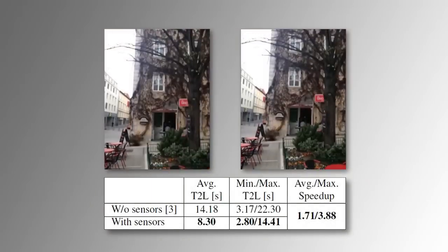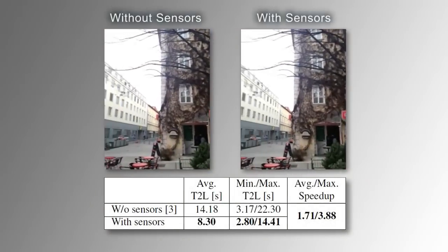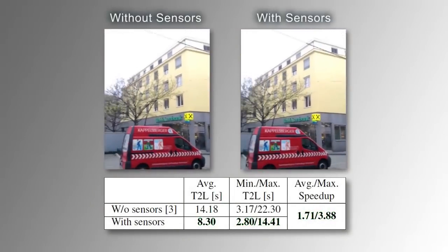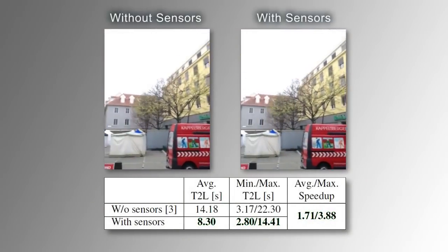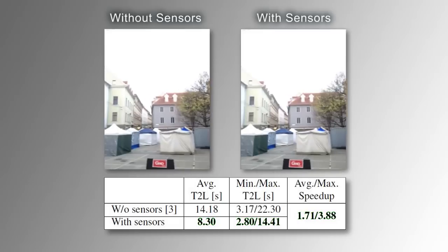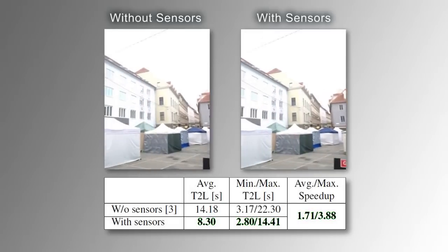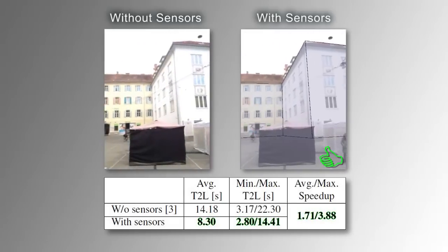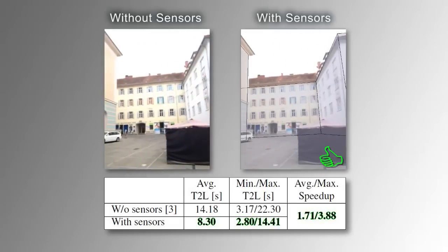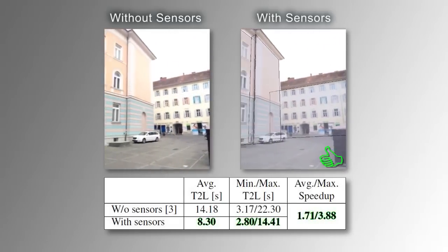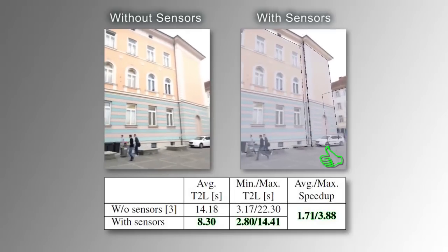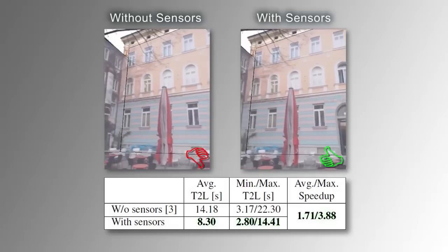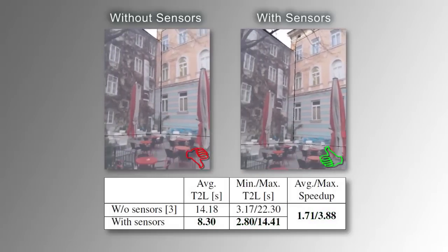Using sensors, an average speed-up of 1.71 is achieved, reducing the required time to localize considerably. While localization takes around 14.2 seconds without sensors, using sensors the required time to localize is reduced to 8.3 seconds.